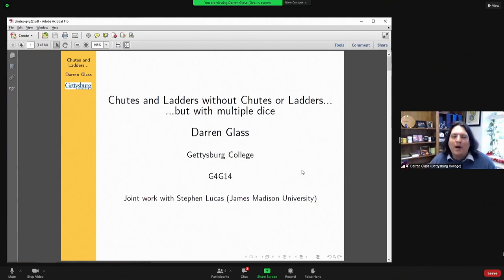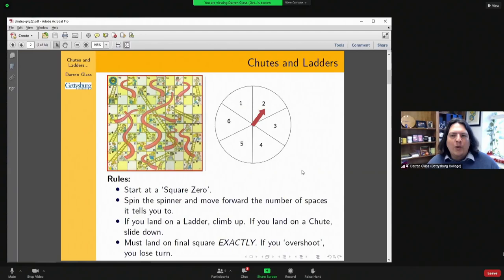So Chutes and Ladders without chutes or ladders but with multiple dice. This is joint work with Steven Lucas. Just quickly to remind you how Chutes and Ladders works: there's squares from 1 to 100, here's a typical board. You start at square zero, spin a spinner uniformly distributed between 1 and 6, you move that number of squares up. Then if there's a ladder you climb up, if there's a chute you fall down. The big thing that makes it mathematically interesting is that you must land on that final square, the number 100 square, exactly. You can't overshoot it, or if you overshoot you lose your turn.